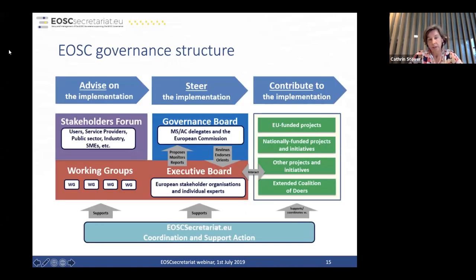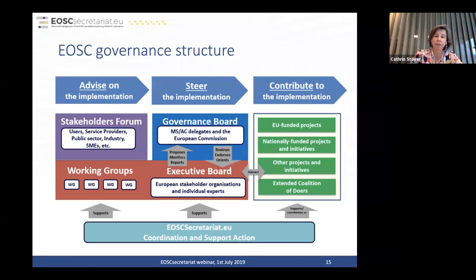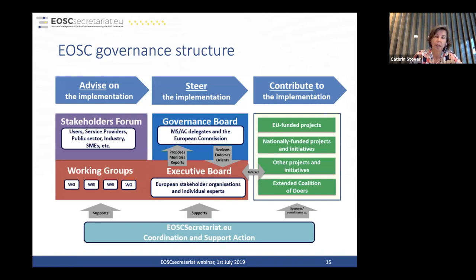The governance structure is quite complex. The EOSC is embedded into existing council decisions, EC rules, and existing Horizon 2020 projects that will transform into Horizon Europe projects. The governance structure consists mainly of the Governance Board and the Executive Board. The Governance Board has delegates from member states, associate countries and the European Commission. The Executive Board comprises European stakeholder organizations and individual experts. There are also working groups and a stakeholder forum.